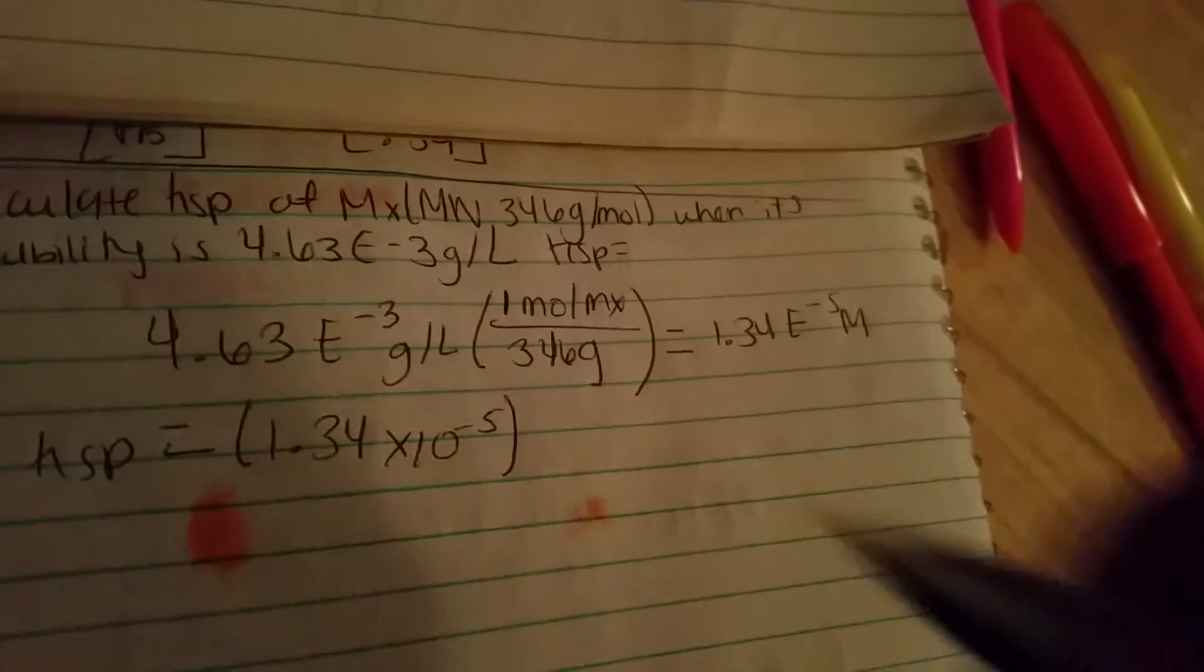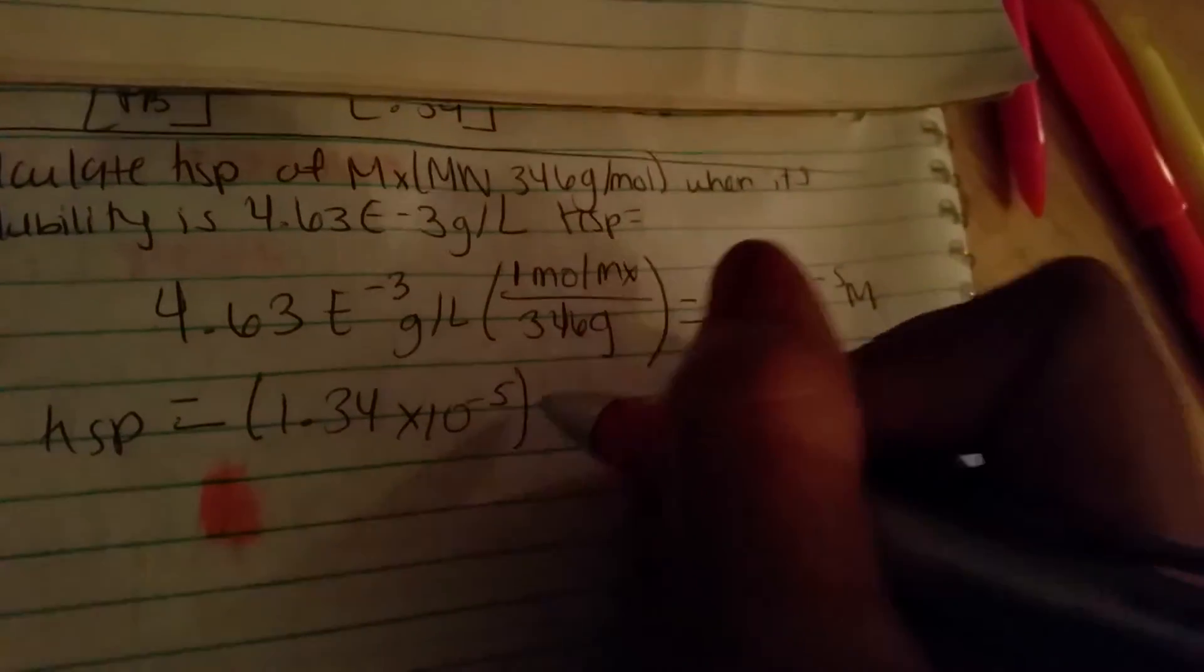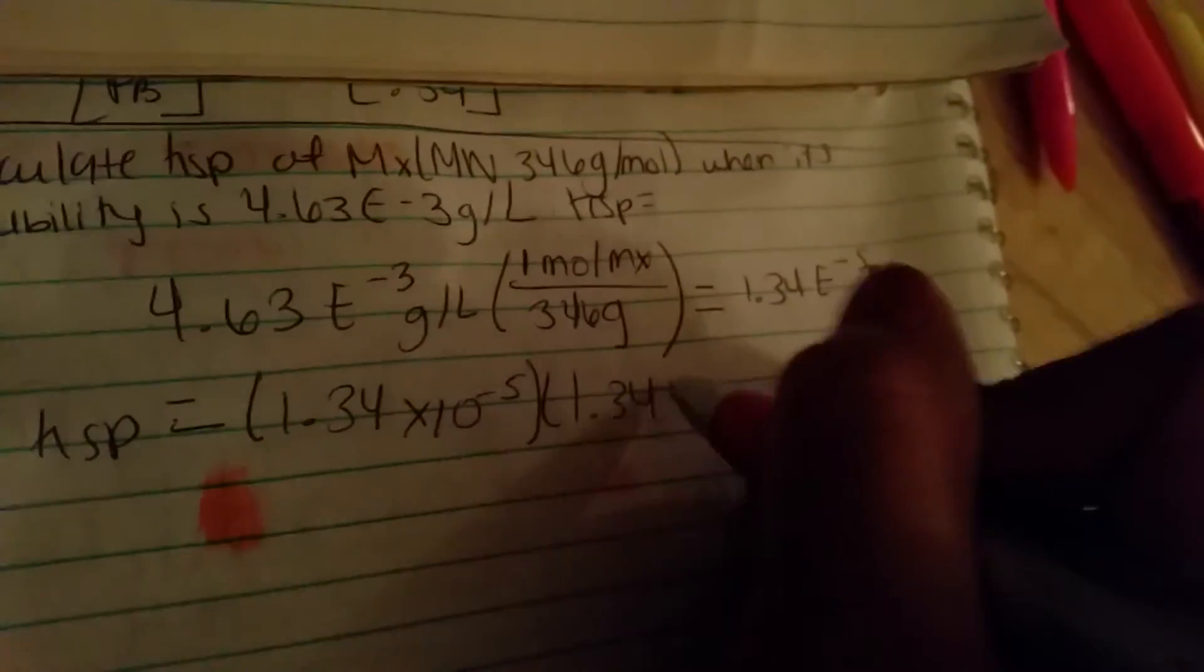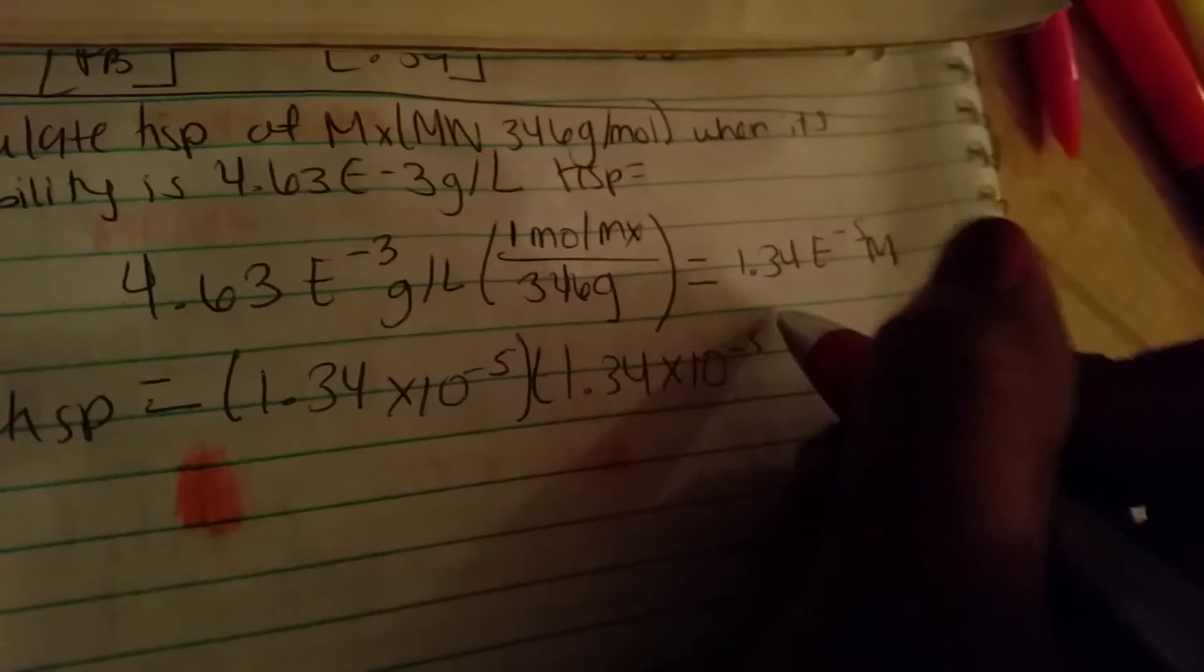Times 10 to the negative 5, times the 1.34 times 10 to negative 5. So your KSP would be 1.8 times 10 to the negative 10.